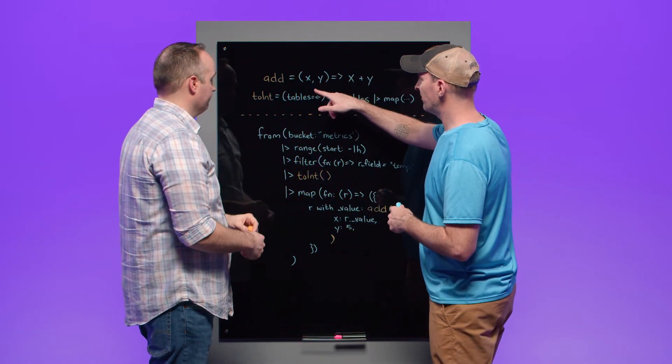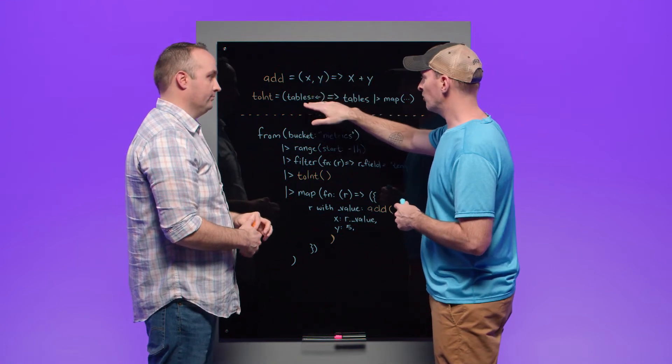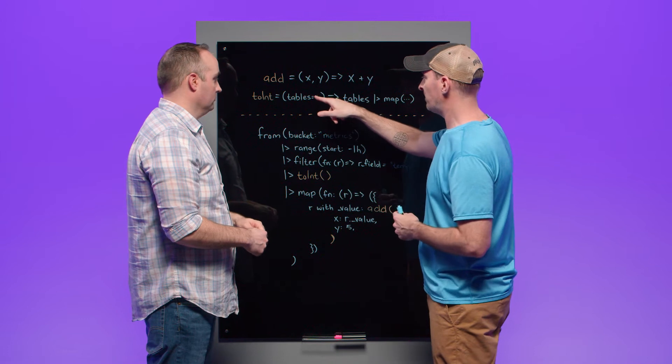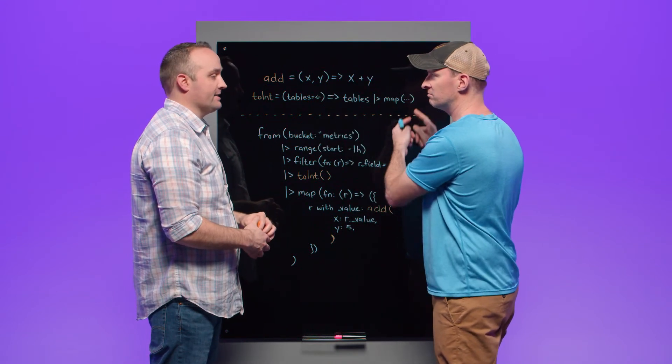So whereas here we have two specific parameters that this function is expecting, here there is dynamic. We're expecting from this table and then it says, once we've got those, let's do something useful with them. Exactly.